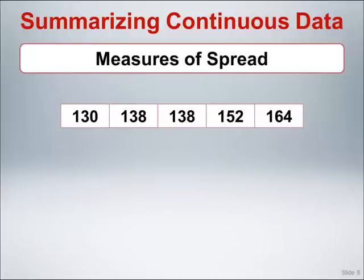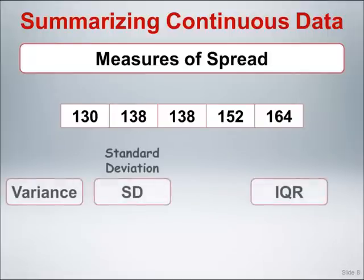Moving on to measures of spread, let's return to our original five observations and calculate the variance, the standard deviation, and the IQR, or interquartile range. Similar to the mean, the variance is a measure of spread focused on differences in magnitude of the observations. This measure is a function of the squared deviations of each individual observation from the mean of the observations.